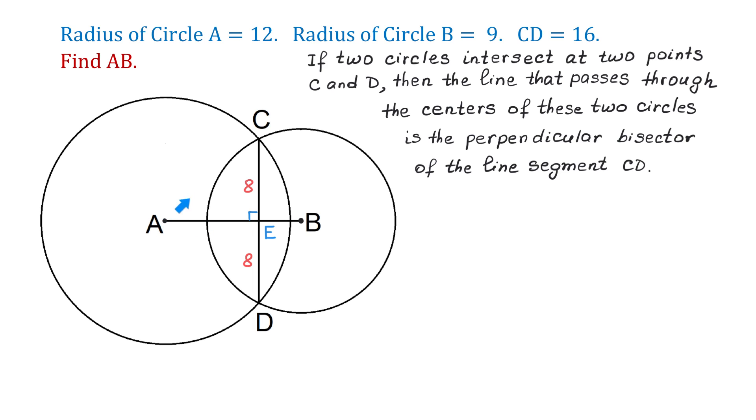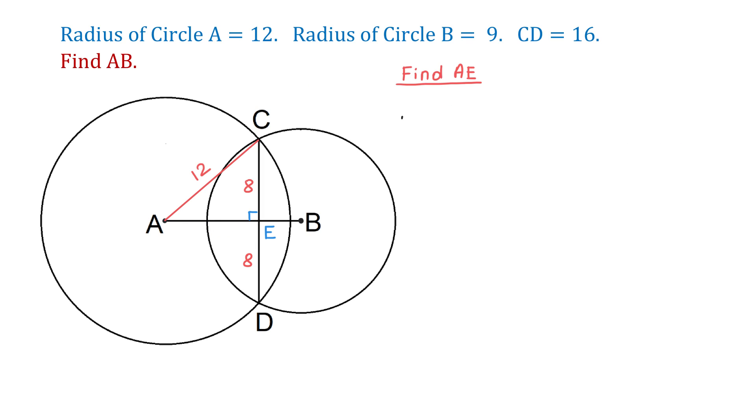For this, we will connect A and C, and now we have a right triangle formed AEC. In this triangle, AC equals 12, because this is the radius of the circle, and CE equals 8. Then we can use the Pythagorean theorem to find AE. We will write that AE squared plus 8 squared equals 12 squared. Then AE squared plus 64 equals 144. Then we will subtract 64 from both sides.